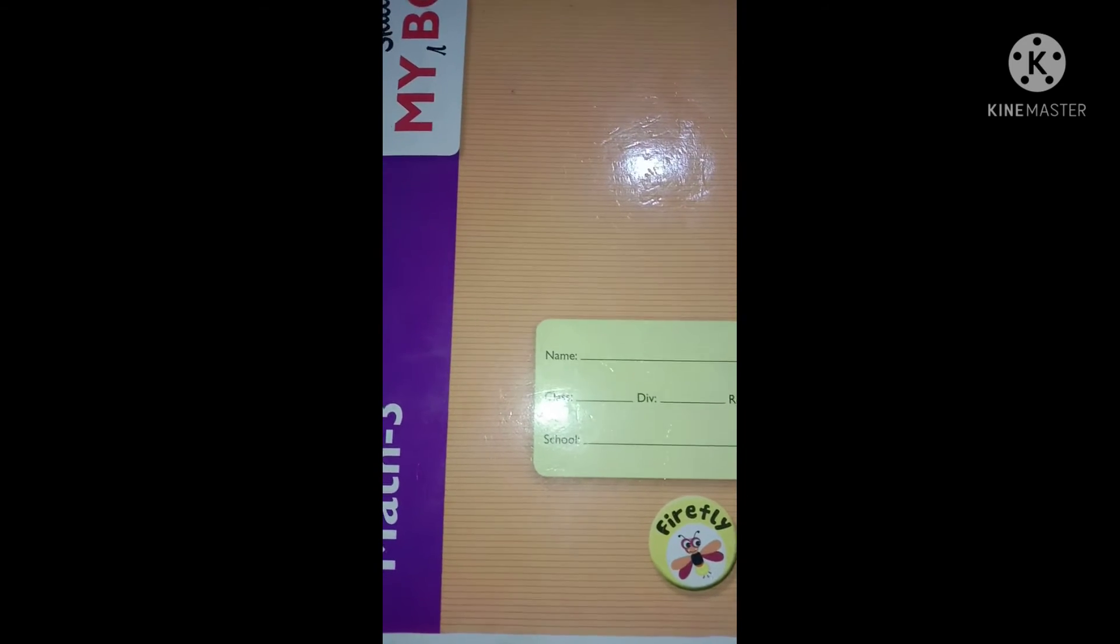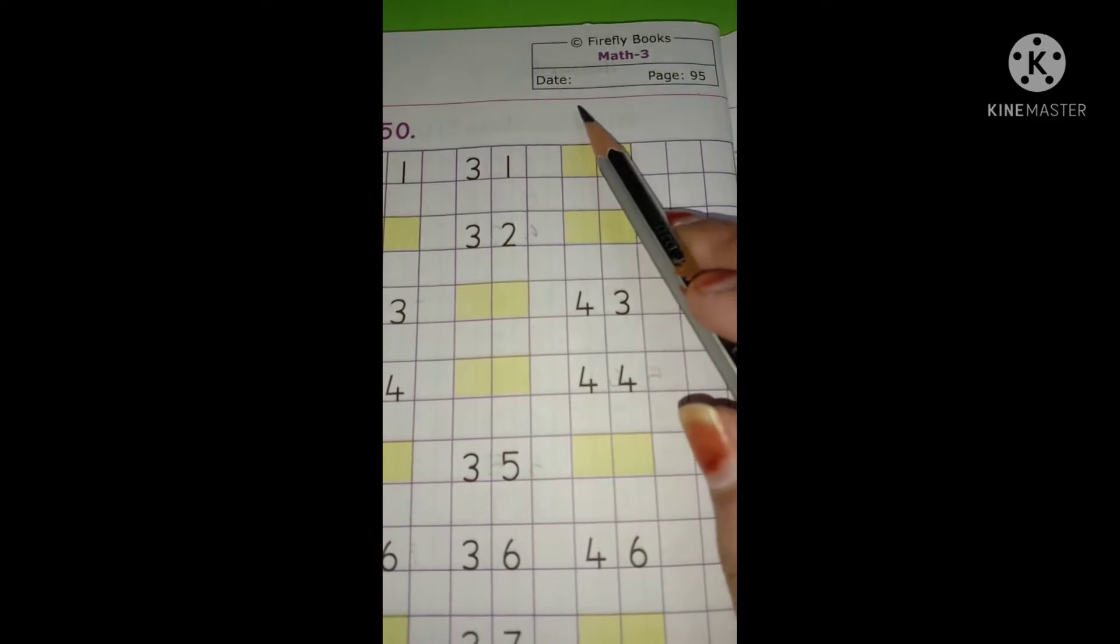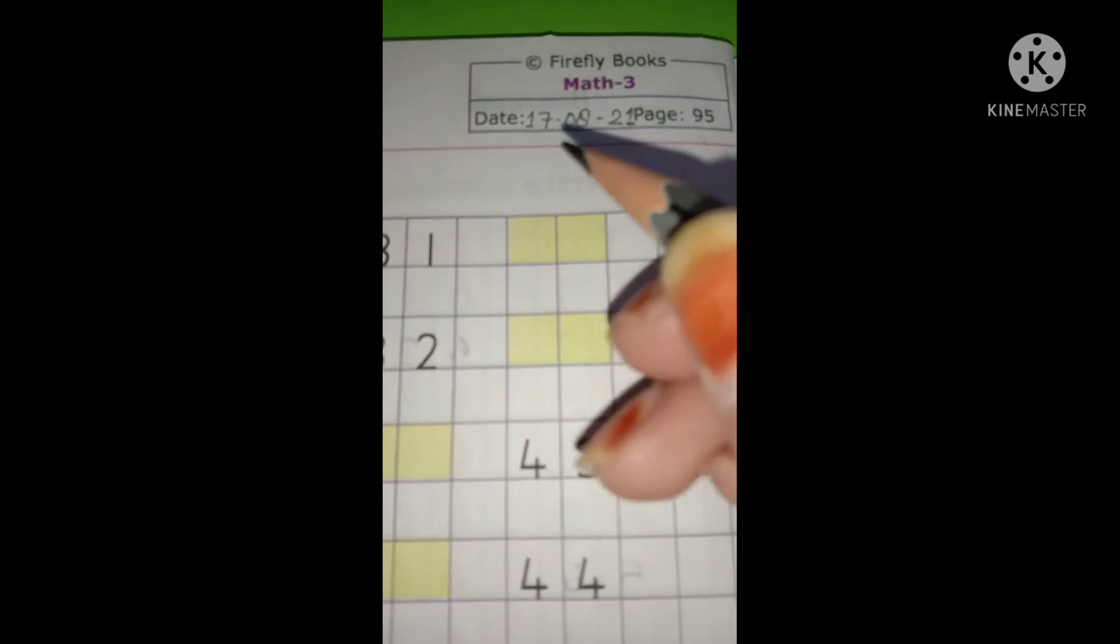Now all of you take out your maths copies, that is my skill book math 3, and open page number 95. First of all, write down the date. What is the date today? So students, today is 17th August.